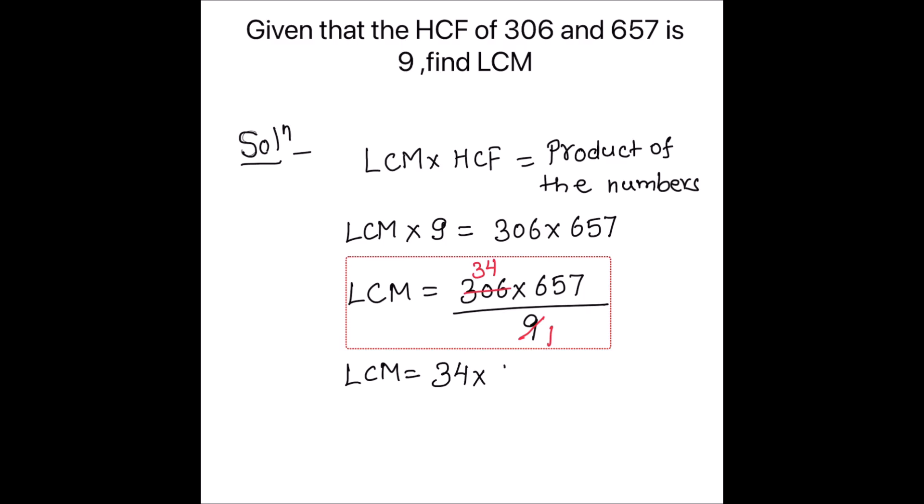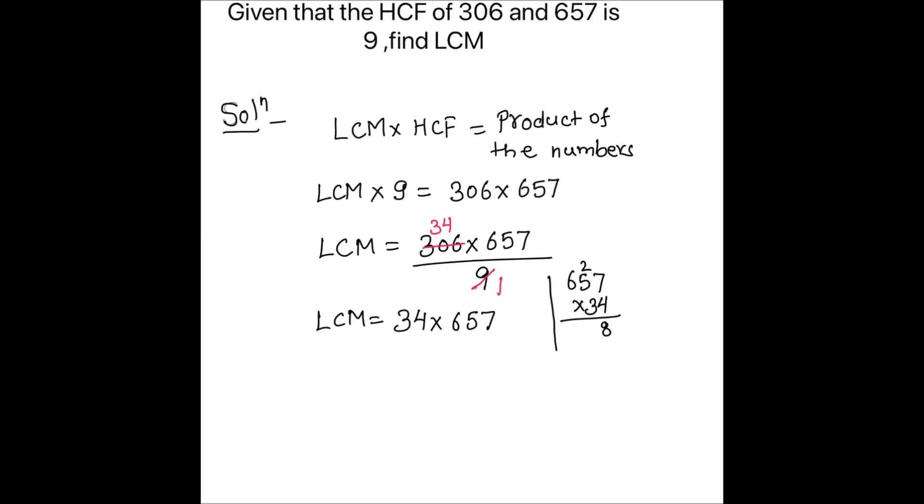Let's divide the two numbers to find out the LCM. So 657 times 34: 4 times 7 is 28, 2 is carried over, 4 times 5 is 20, 20 plus 2 is 22, so that's 2, 2 is carried over, 4 times 6 is 24, 24 plus 2 is 26.